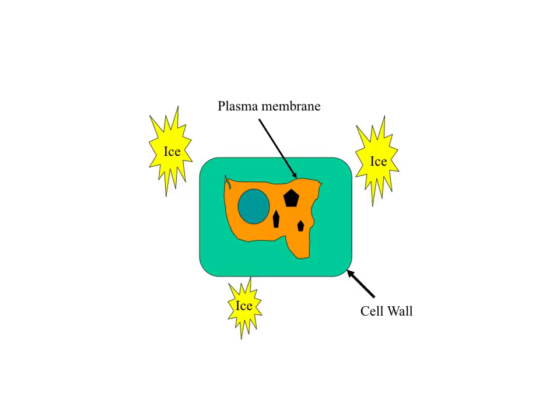As water moves out of the plasma membrane, it contracts naturally. If damage to the membrane were to occur, the result would be death, especially upon rehydration in late winter or early spring.